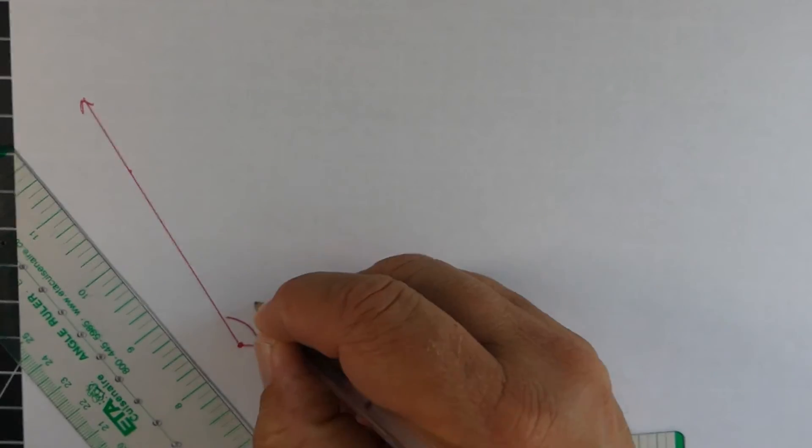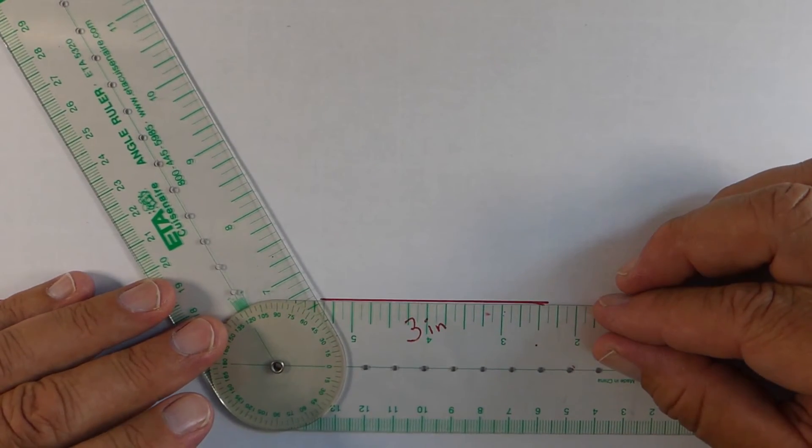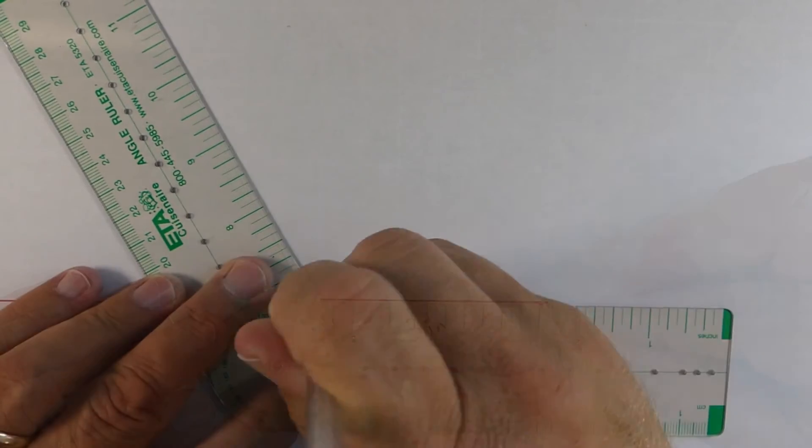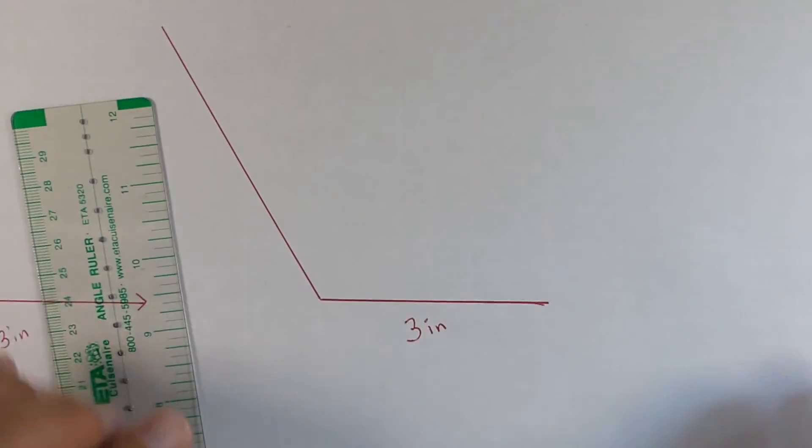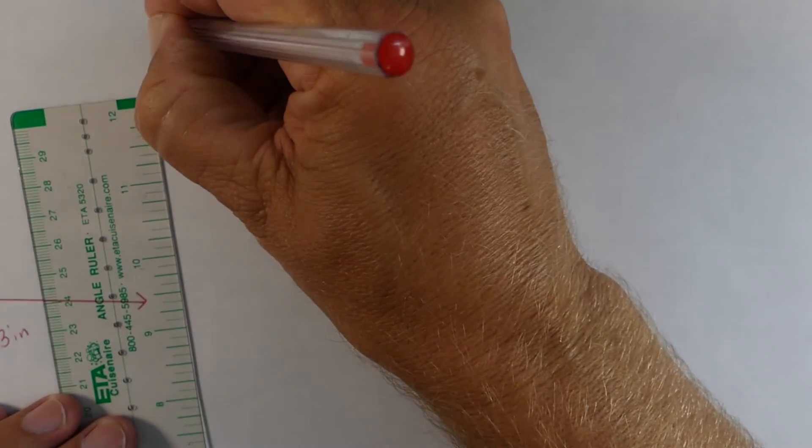And if we want to do option number two for this, start with a ray. And again, this time, open up the angle ruler to 120 degrees, and then just make your mark that way. Both of them are good, and both of them work fine.